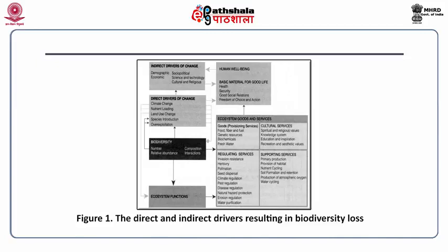This flowchart gives the direct and indirect drivers resulting in biodiversity loss. Among the direct drivers of change are climate change, nutrient loading, land use change, new species introduction and over-exploitation, and because of these factors this ultimately affects the ecosystem functions. The indirect drivers of change are demographic, economic, socio-political, science and technology, and cultural and religious reasons.